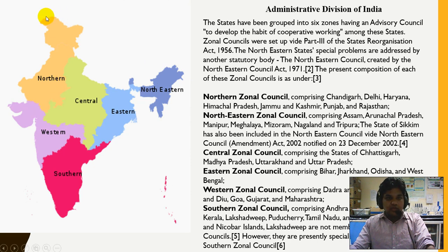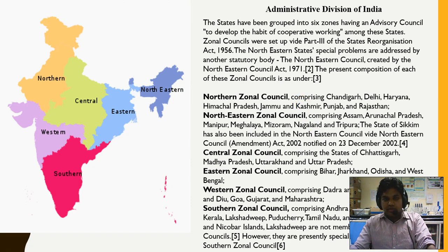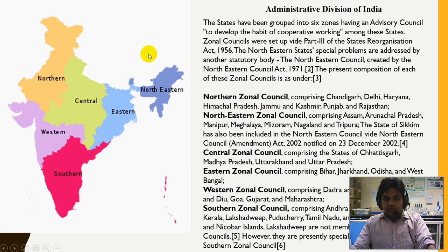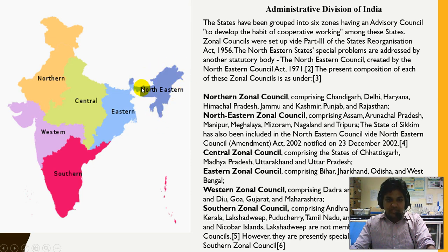From this figure you can see the states in the northern section: Chandigarh, Delhi, Haryana, Himachal Pradesh, Jammu and Kashmir, Punjab, and Rajasthan. In the North Eastern Zonal Council we have Assam, Arunachal Pradesh, Manipur, Meghalaya, Mizoram, Nagaland, and Tripura — these are called the Seven Sisters. The eighth state is Sikkim, which is not connected with the other northeastern states but is still included in the North Eastern Zonal Council.